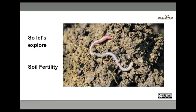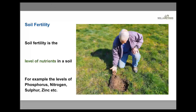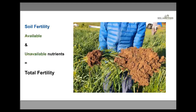Let's jump in and start to explore soil fertility with our friend Fred the Earthworm, who is of course a key part of fertility in the soil. In a nutshell, soil fertility is the level of nutrients in a soil — for example, phosphorus, nitrogen, sulphur, zinc, copper, etc. There's a whole lot of nutrients that plants, animals and life need. We often talk about available nutrients and unavailable nutrients — those two together equal total fertility. What's available and what's unavailable together equals total fertility.